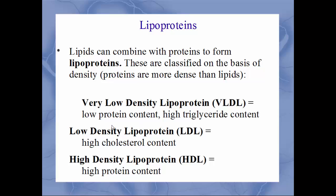The next one is LDL — low density lipoprotein. Again, a lower amount of protein but a high cholesterol content. This is your bad cholesterol — the LDL — which you want to be as low as possible. The opposite is HDL — the good cholesterol — high density lipoprotein, with high protein and low fat content. So HDL is what you want more of; LDL is bad, and VLDL is really bad.